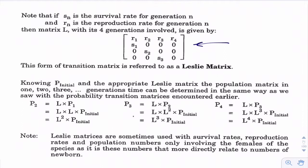You've got the reproduction rates along the top and the survival rates in that diagonal starting with the first entry below. Everything else is 0. It's a special kind of transformation matrix that helps us work out population numbers five years, ten years, or multiple generations into the future, just by squaring, cubing, or raising the Leslie matrix to higher powers.